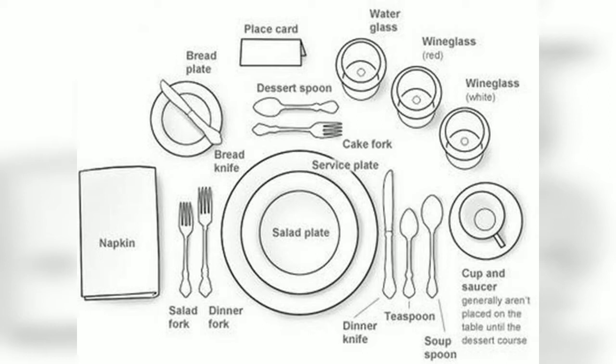Similarly, on a table there is a particular way in which each and every cutlery, glassware, and napkin is placed. That is what is very important when you are doing the table setup. As you can see, this napkin has been placed on the left hand side.